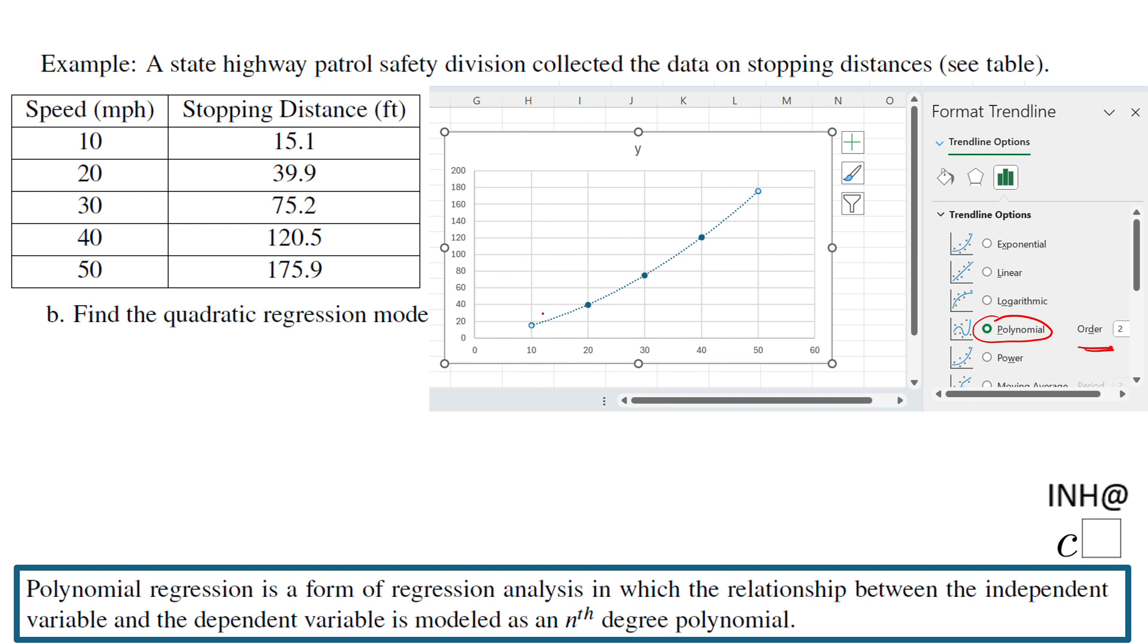Once you do this degree two, you notice Excel finds the curve that fits the data very nicely. It goes through every single point. That's not the case most of the time - you will have points up and down around the curve that is given by the Excel spreadsheet. But in this case we get the exact curve, which is good.